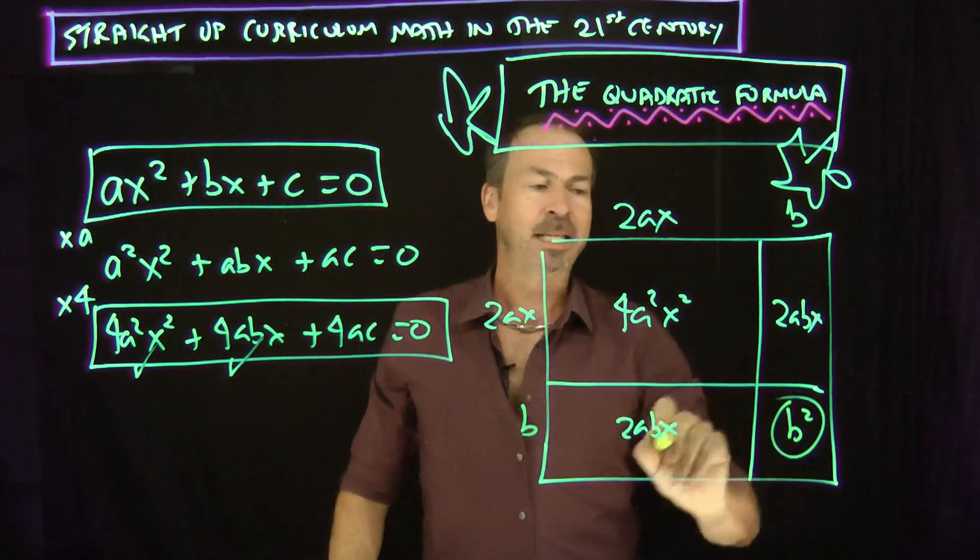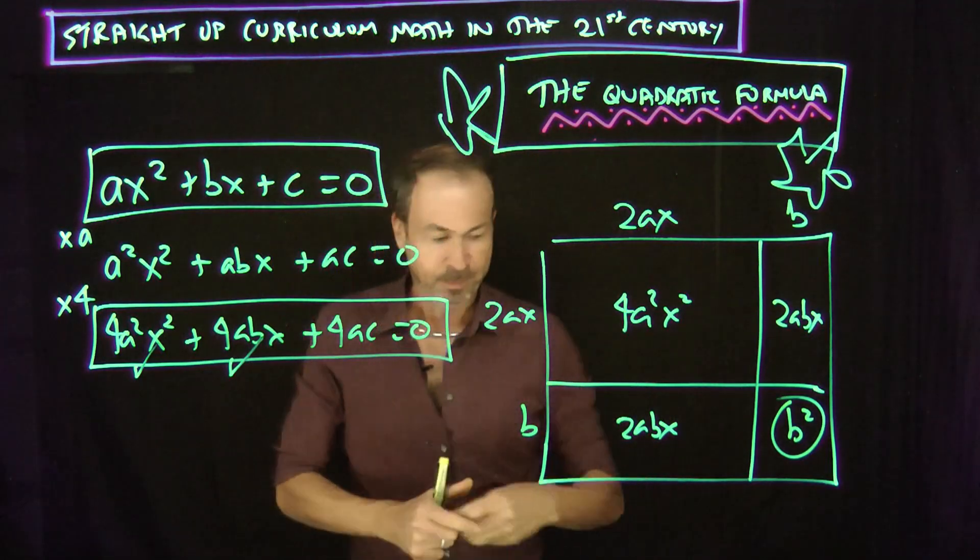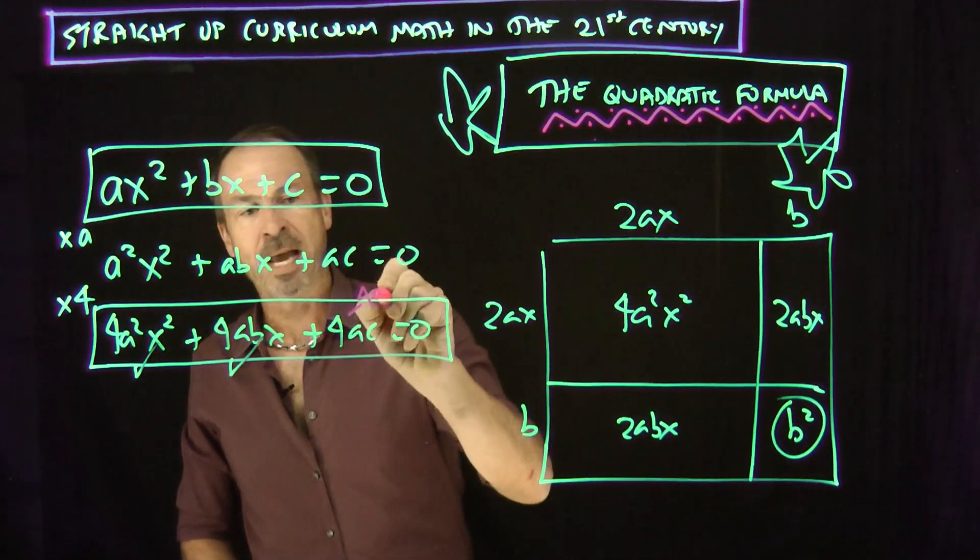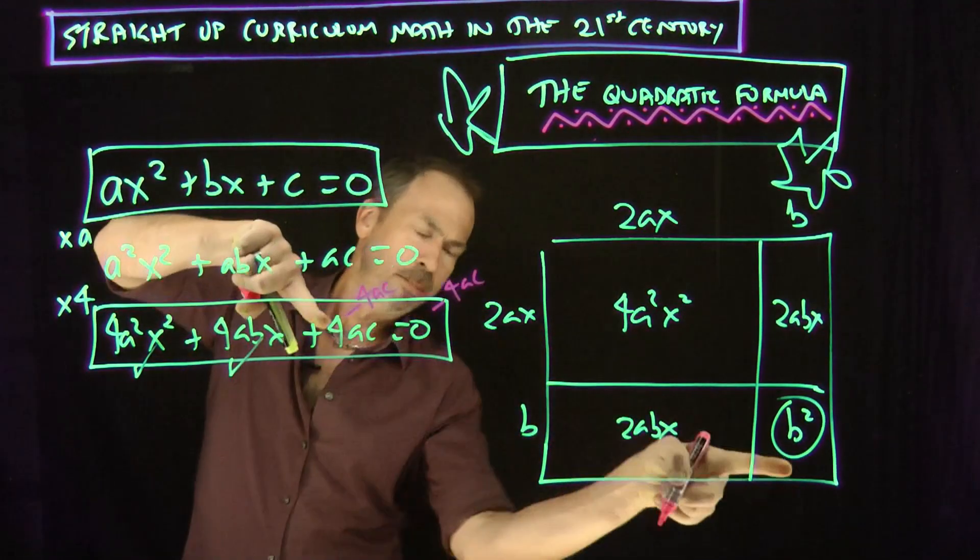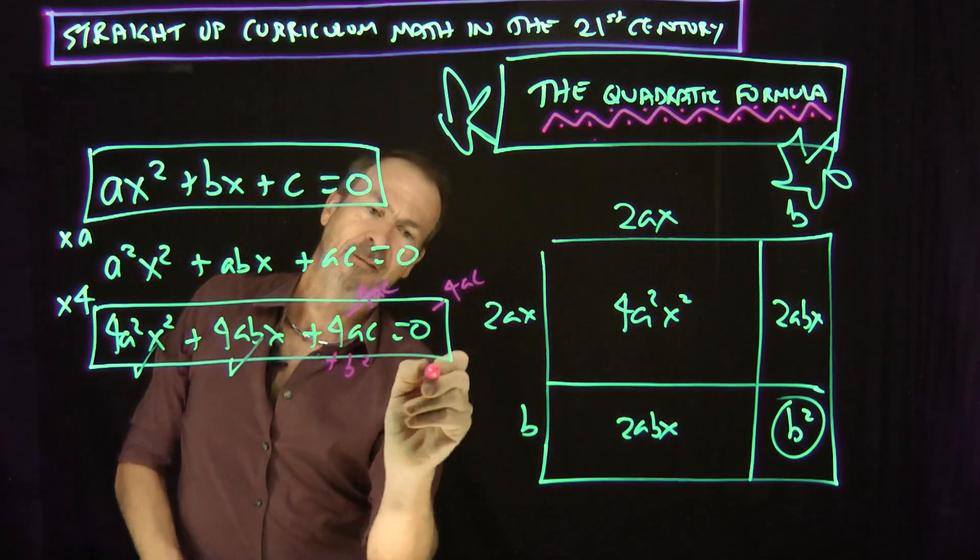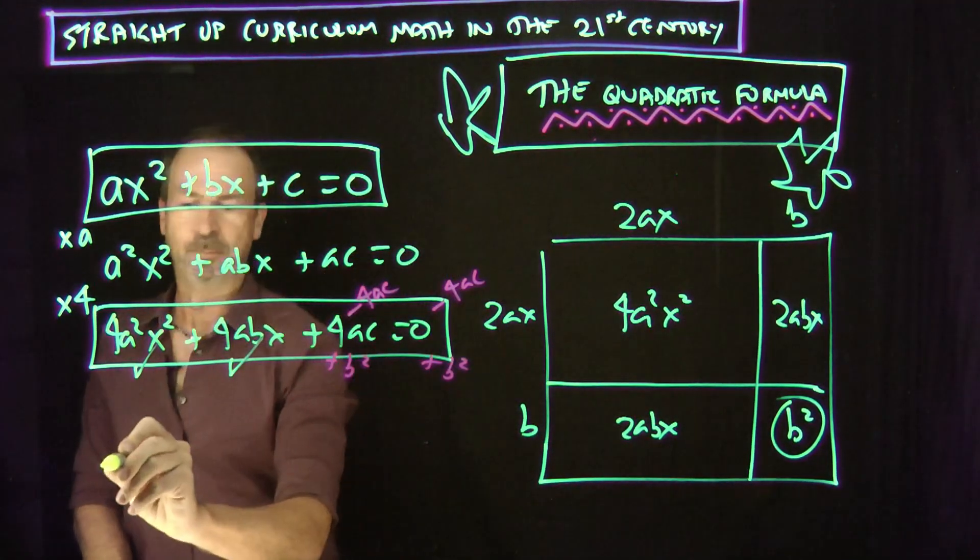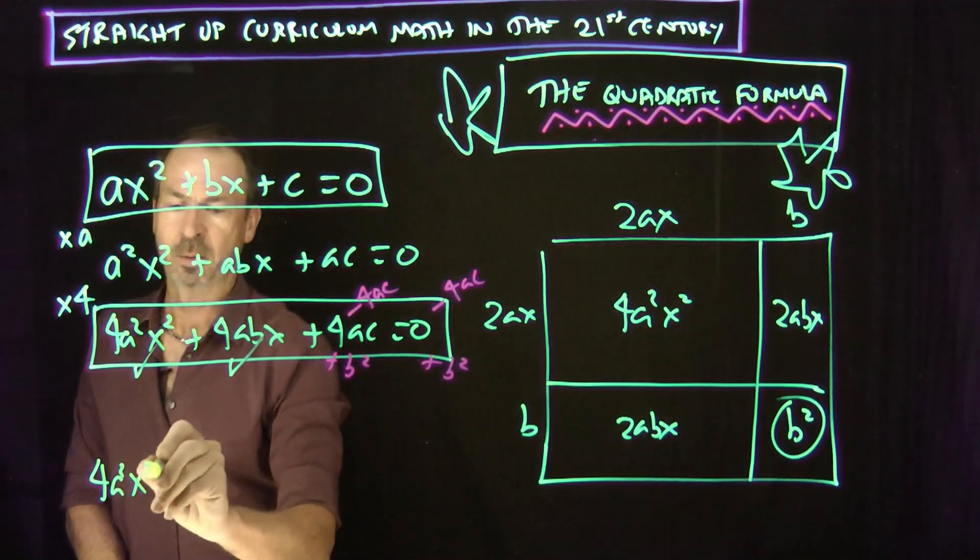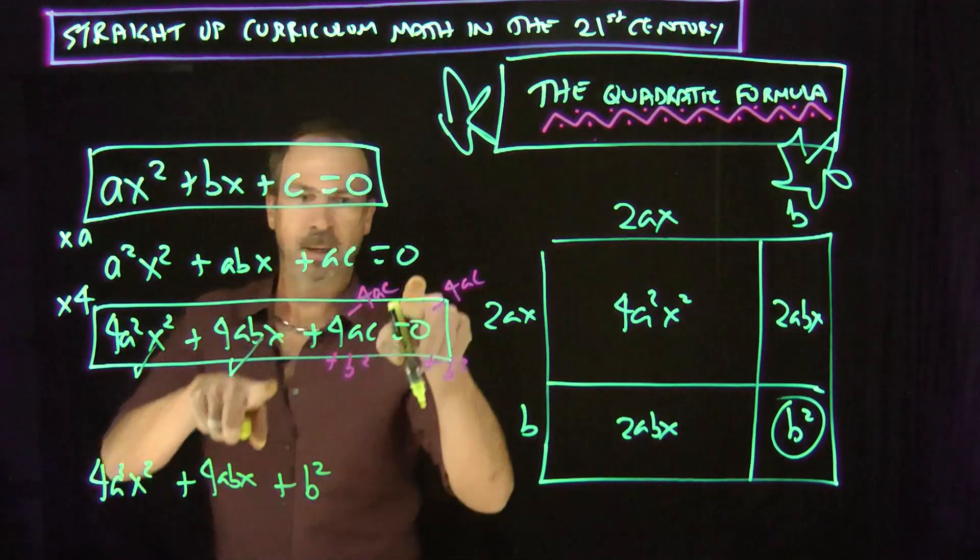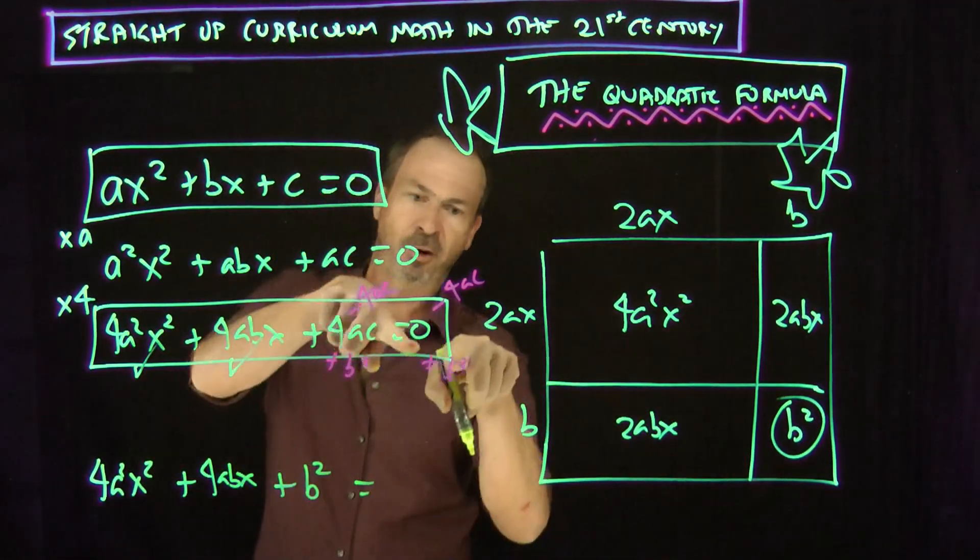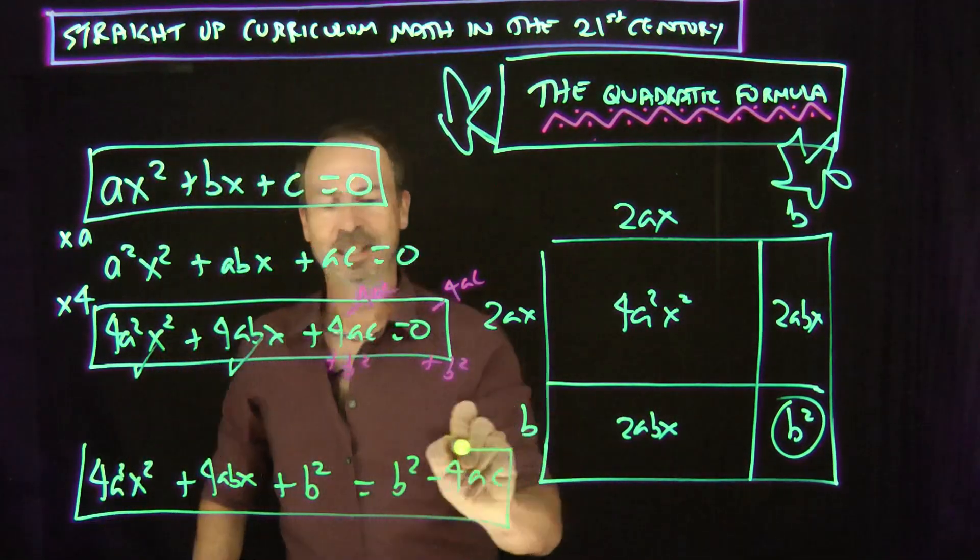So what I'm going to do then is I'll get that 4ac out of the way. Subtract 4ac from the left and also from the right. Consequences. And I want a b squared there. So let's add a b squared on the left, add a b squared on the right. So that means I'm really dealing with this equation. 4a squared x squared plus 4abx plus b squared equals I've got a b squared minus a 4ac. Let me work with that equation instead.